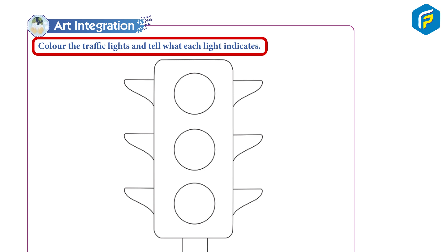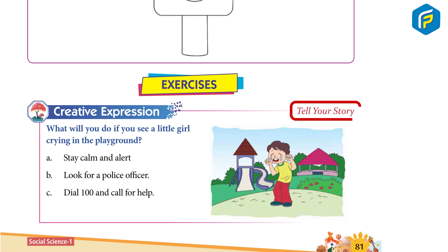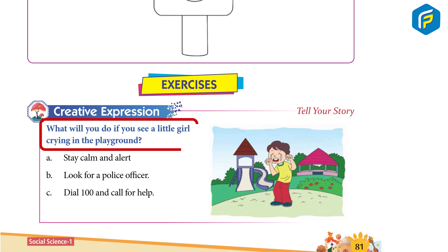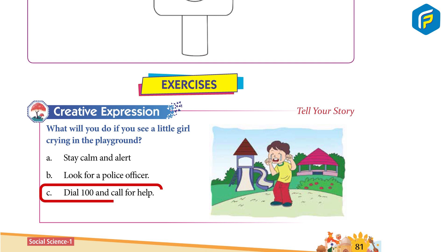Art integration: Color the traffic lights and tell what each light indicates. Creative expression — tell your story: What will you do if you see a little girl crying in the playground? A) Stay calm and alert. B) Look for a police officer. C) Dial 100 and call for help.